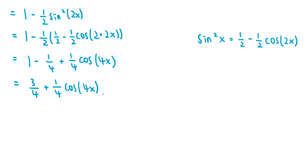This expression is now in the simplified form we wanted, because there are no higher exponents involving the trigonometric functions sine and cosine. We have the multiple angle 4x in the second term, but that was allowed. So sine 4th of x plus cosine 4th of x simplifies to 3 over 4 plus one fourth cosine of 4x.